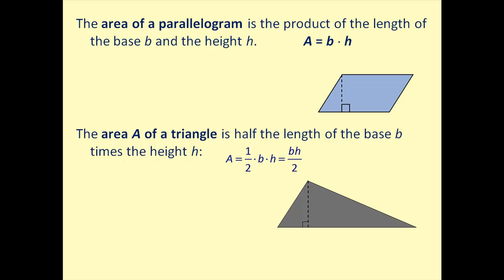Now let's talk about the area of a parallelogram. The area is the product of the length of the base and the height, or base times height. If the base is 12 meters and the height is 6 meters, then the area equals 6 meters times 12 meters, which equals 72 meters squared — just like the area of a rectangle. In fact, if you take a triangle from one side and move it to the other, you'd form a rectangle.